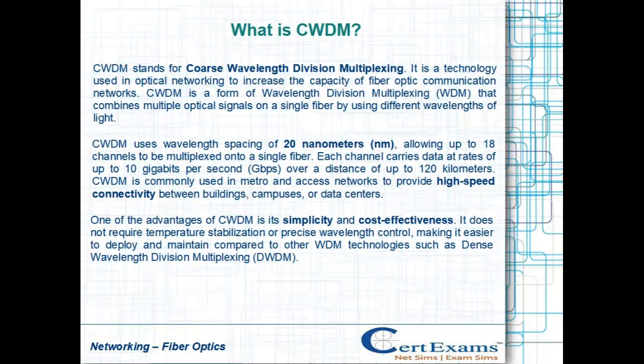In this video, we will learn what is CWDM. CWDM stands for Coarse Wavelength Division Multiplexing. It is a technology used in optical networking to increase the capacity of fiber-optic communication networks.